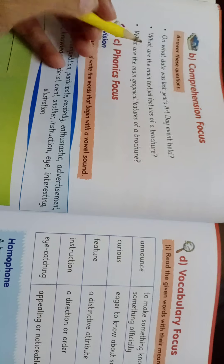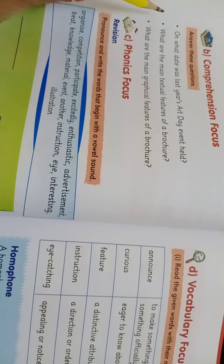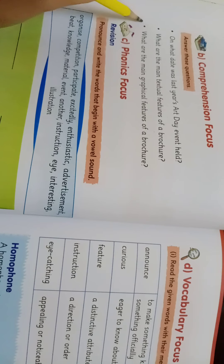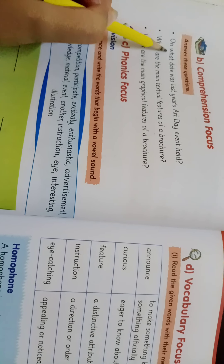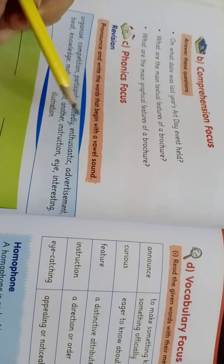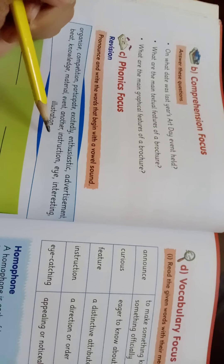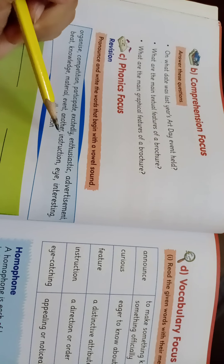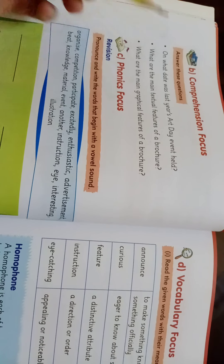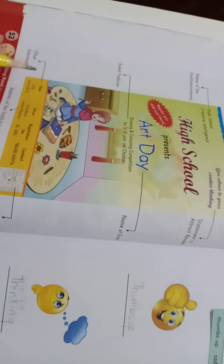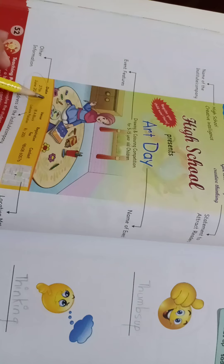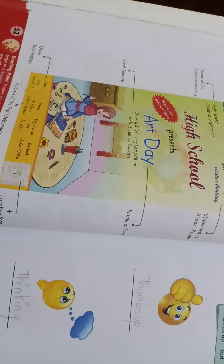On page number 54 we have comprehension focus with three questions. The first question is: on what date was last year's Art Day event held? The answer is: last year's Art Day event was held on 27th June 2016.